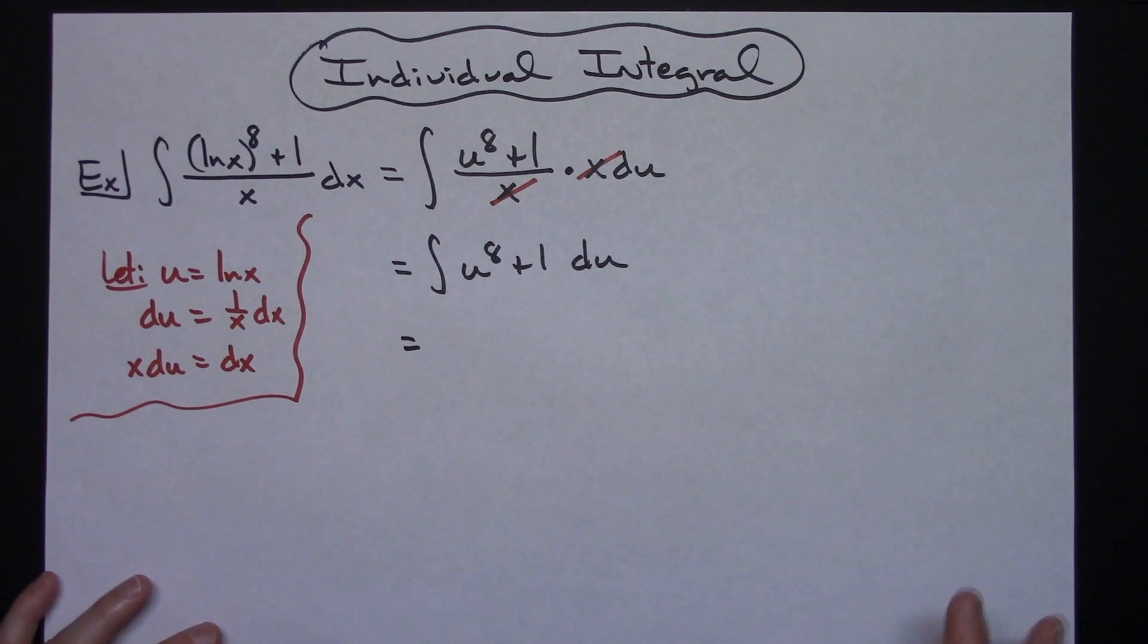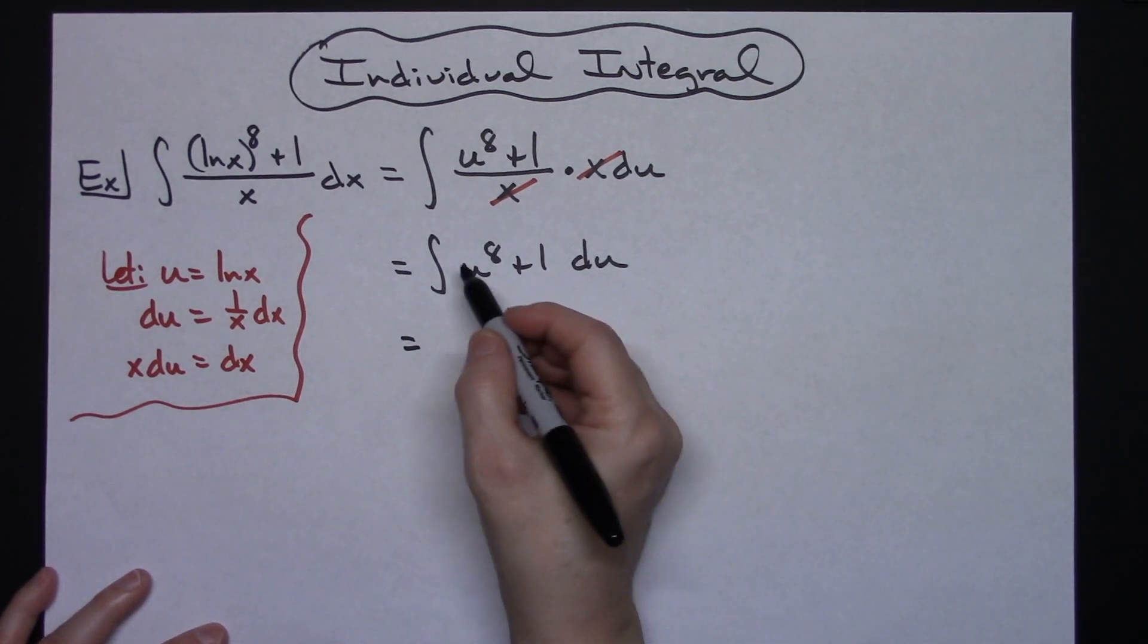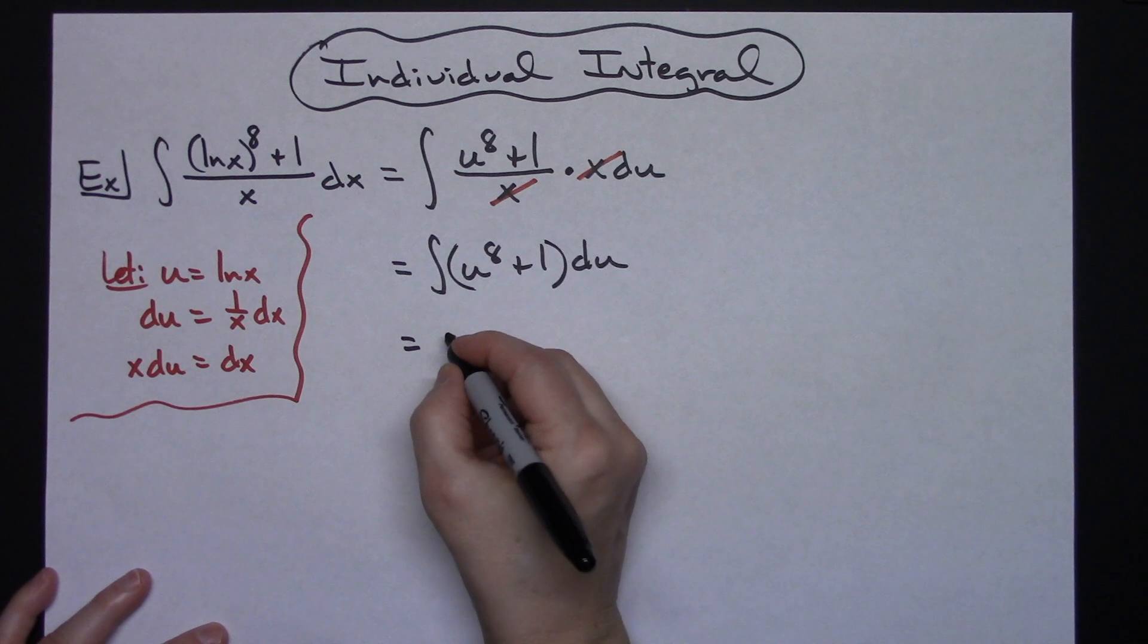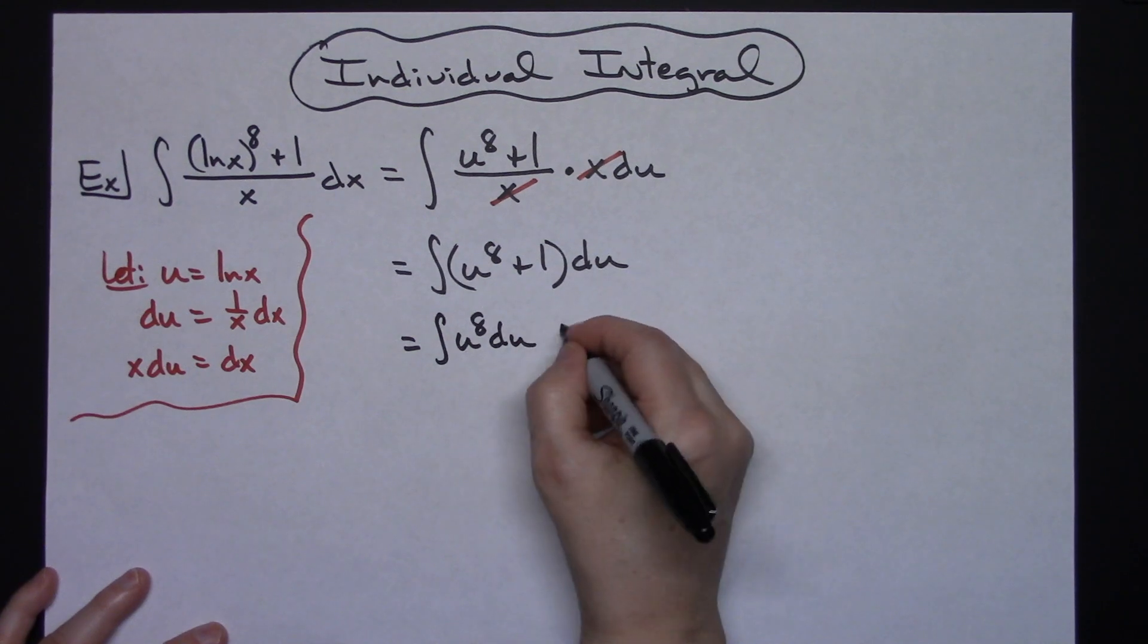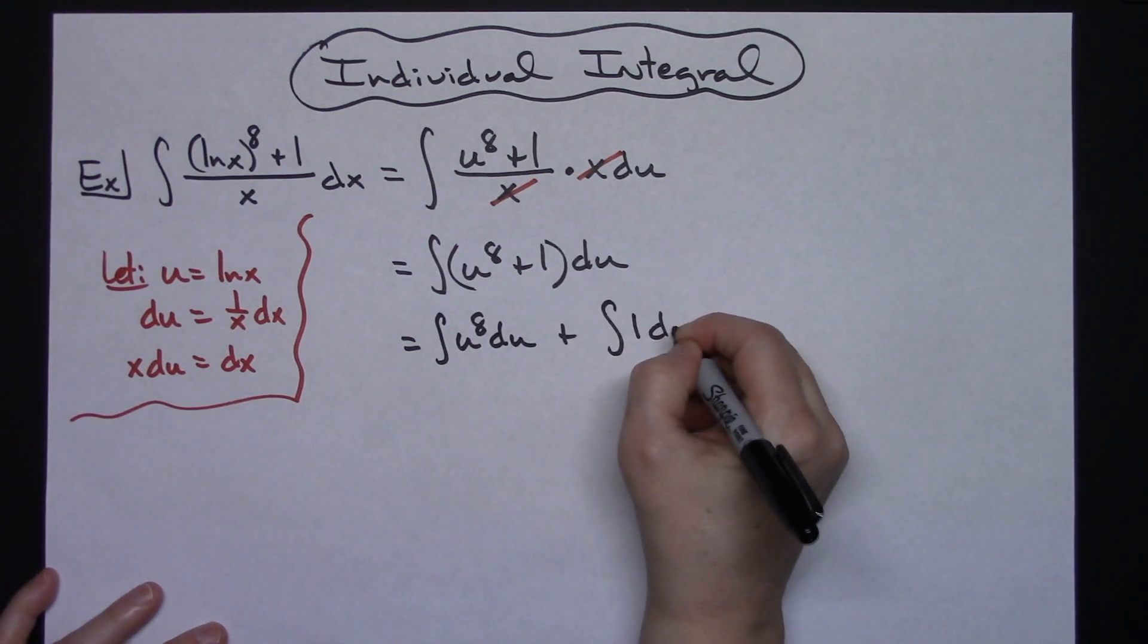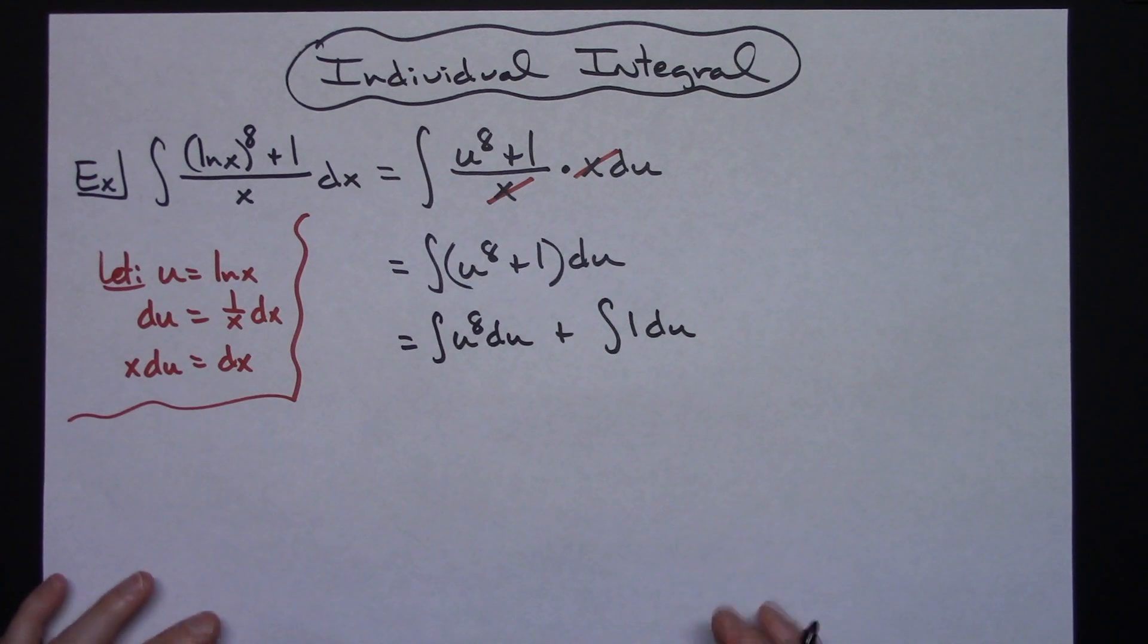But you also hopefully at this point you can just recognize that and go, oh hey, I can take the integral of both of those the way it sits as a polynomial curve. So the integral of u to the eighth du plus the integral of 1 du, separating it out like that, showing all the steps.